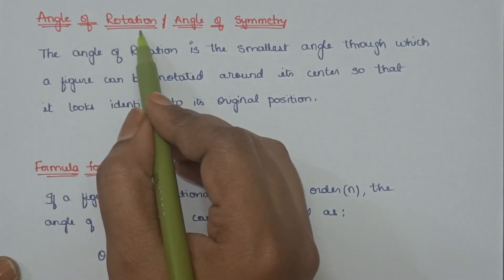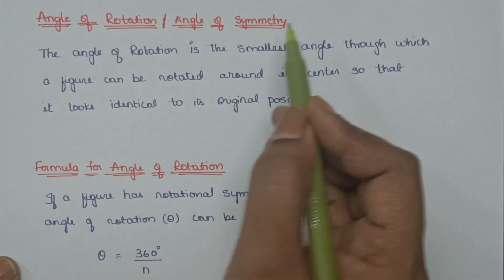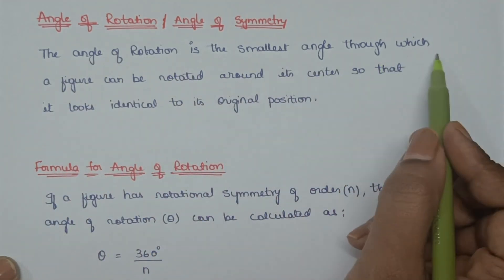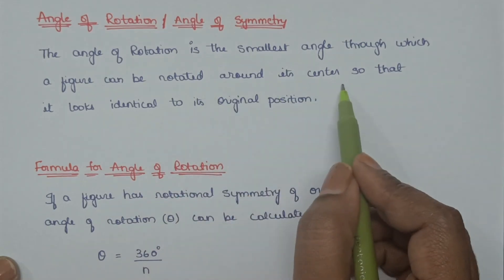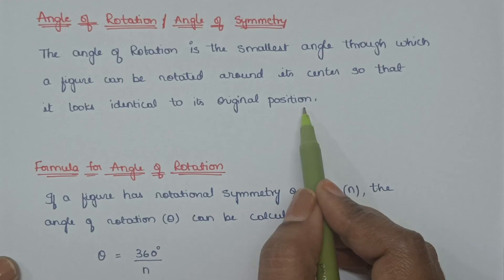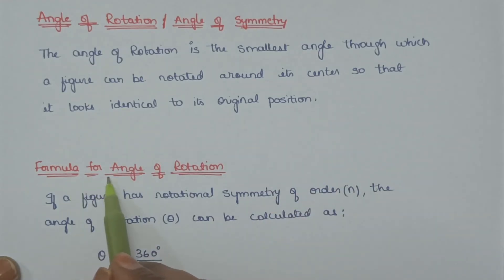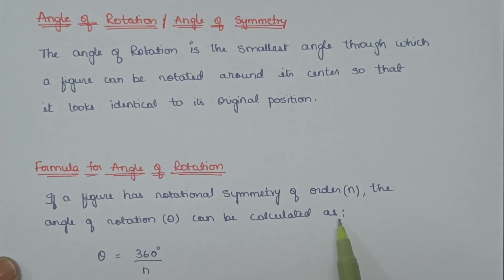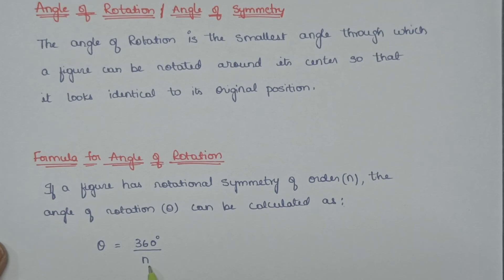Angle of rotation, or angular symmetry. The angle of rotation is the smallest angle through which a figure can be rotated around its center so that it looks identical to its original position. Formula for angle of rotation: if a figure has rotational symmetry of order n, the angle of rotation theta can be calculated as theta equals 360 degrees divided by n, where n is the order of symmetry.